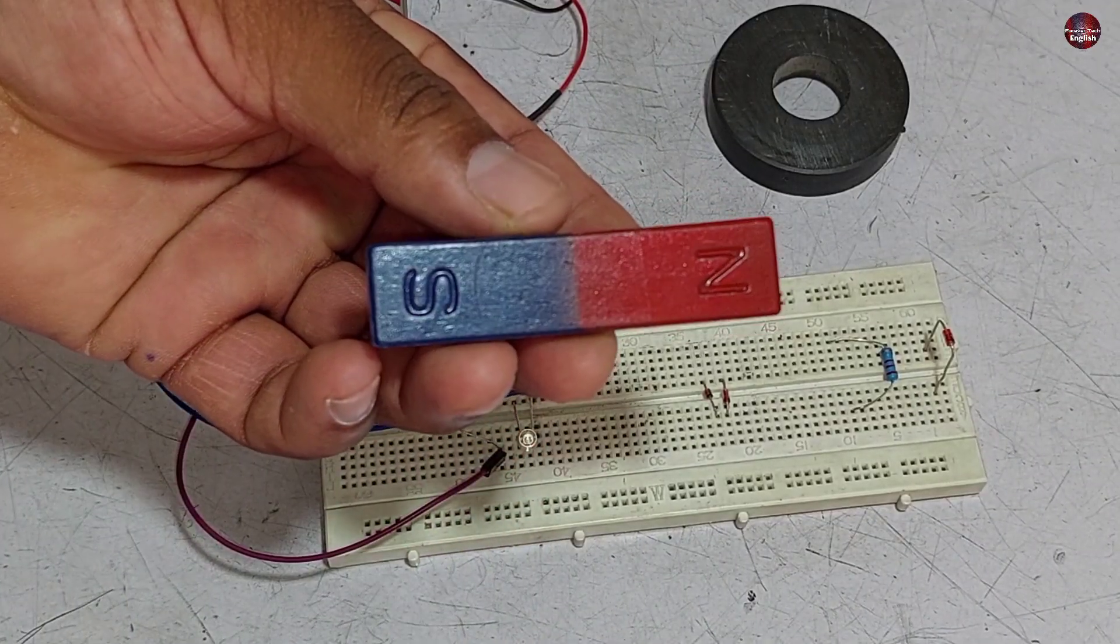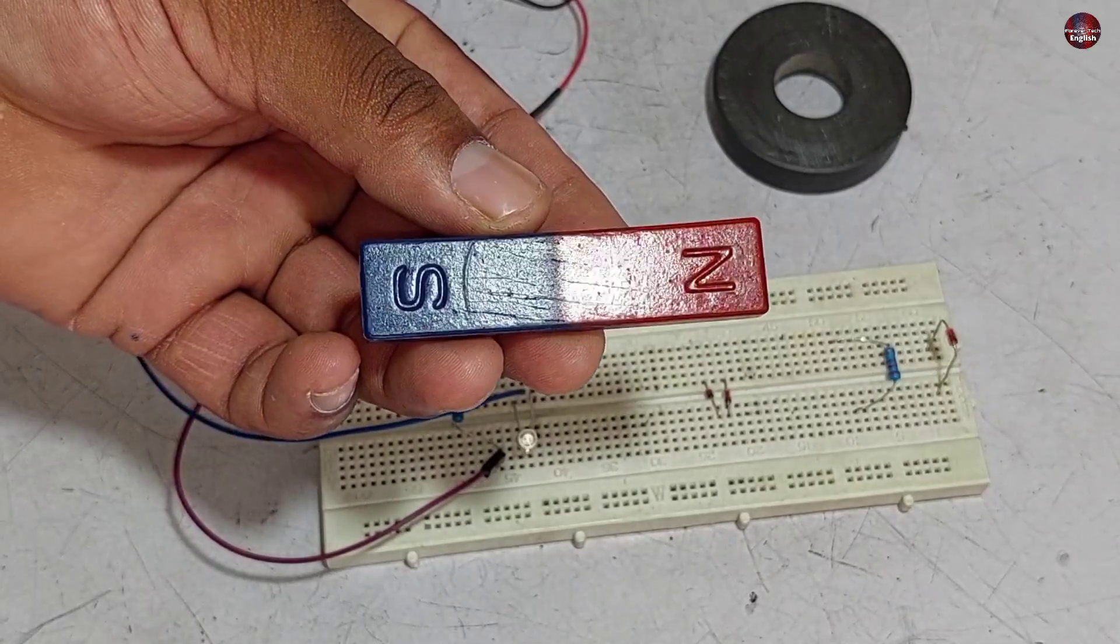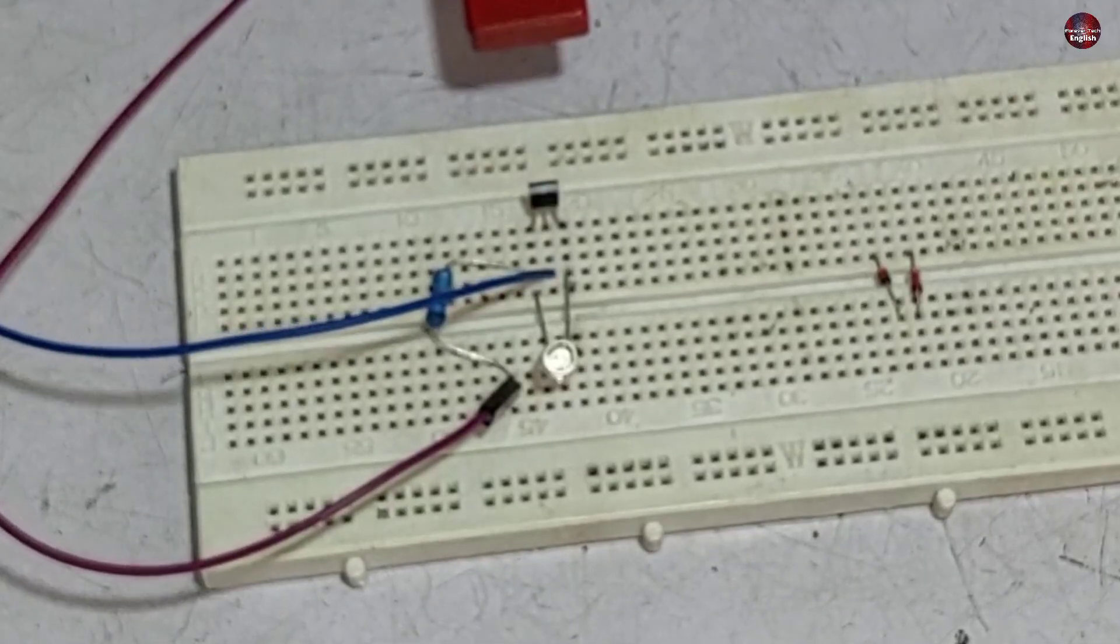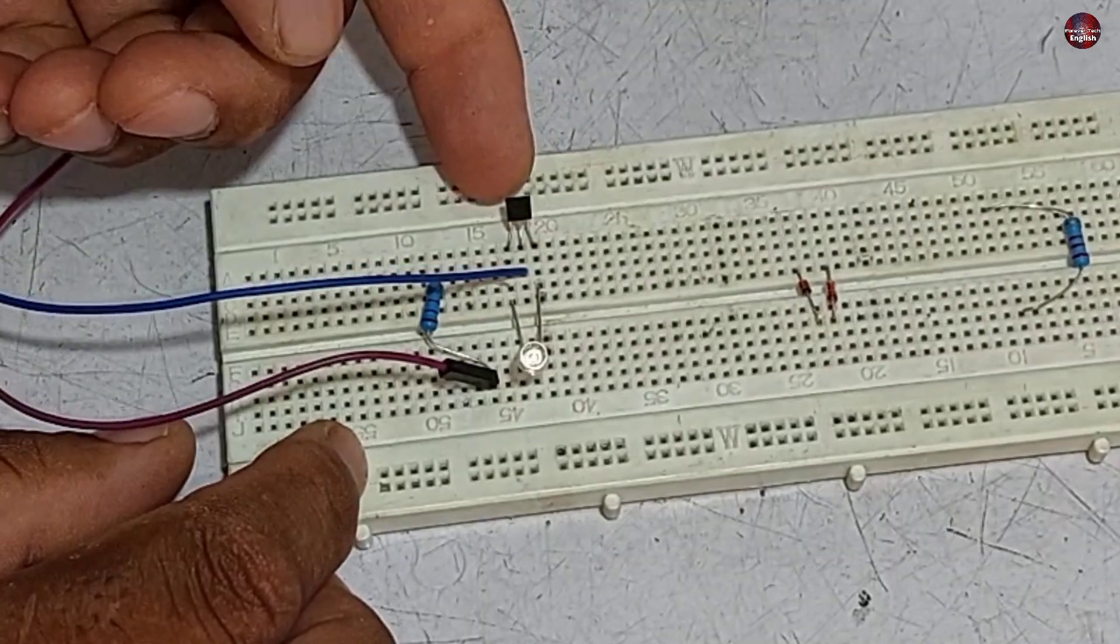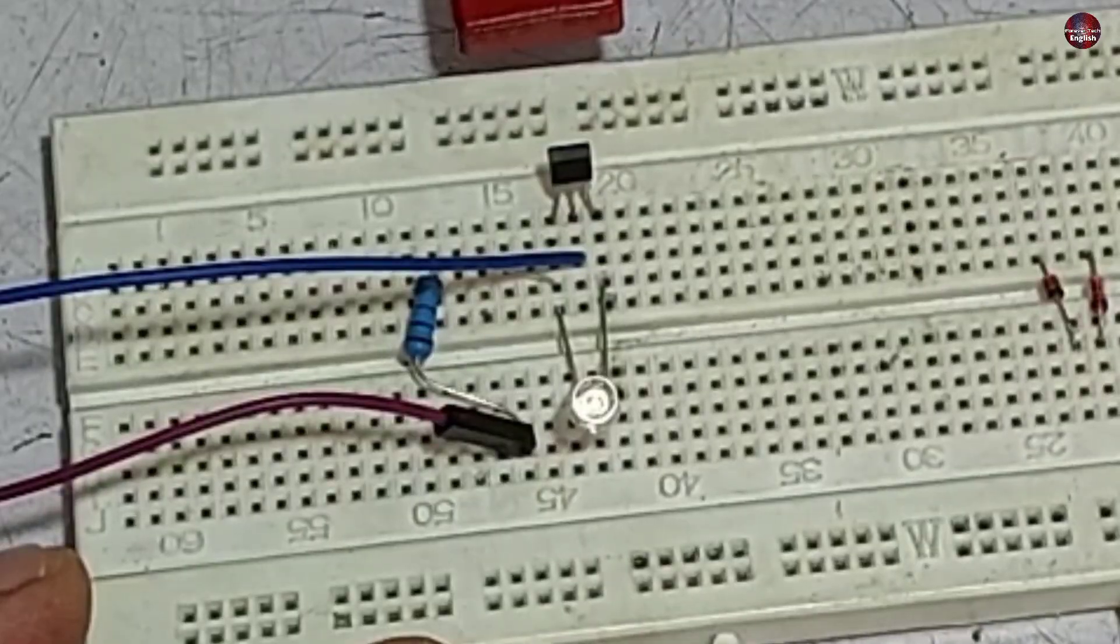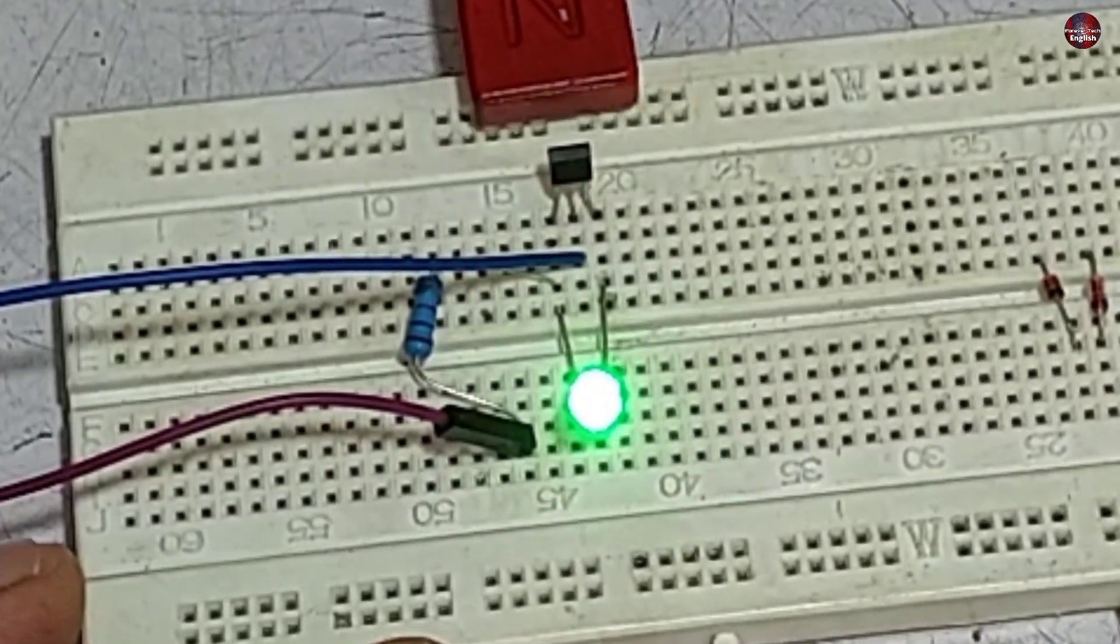Now I will explain and test how the unipolar hall sensors work and how they switch. Now I will bring the north side of the magnet close to the sensor, this is the back side, and this is the front side of the hall sensor. When I brought the north pole on the back side of the hall sensor, the LED light glowed.